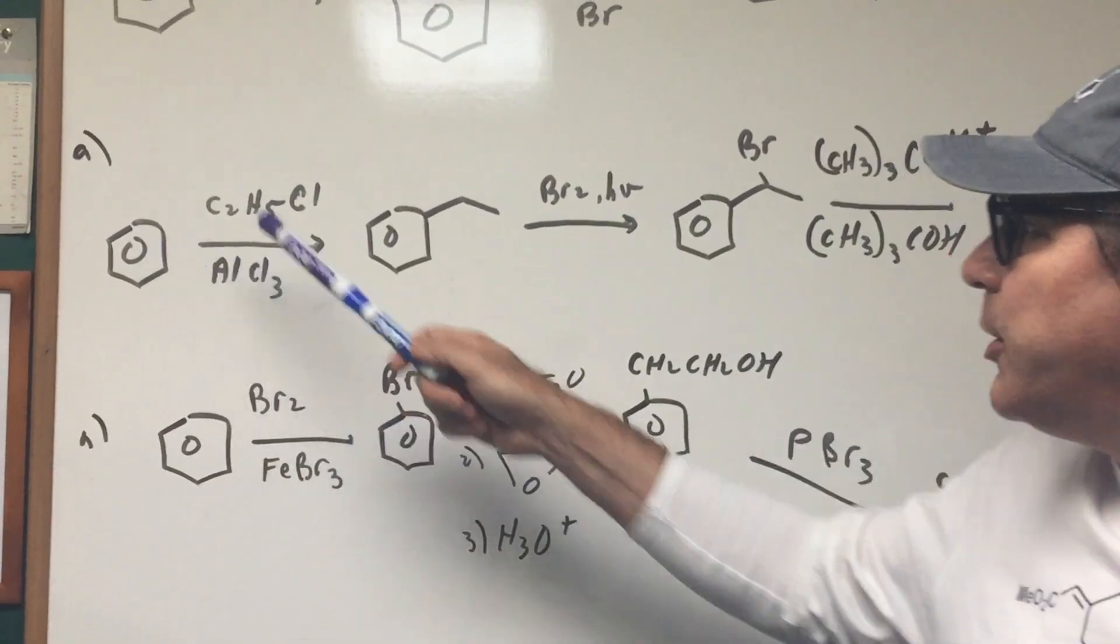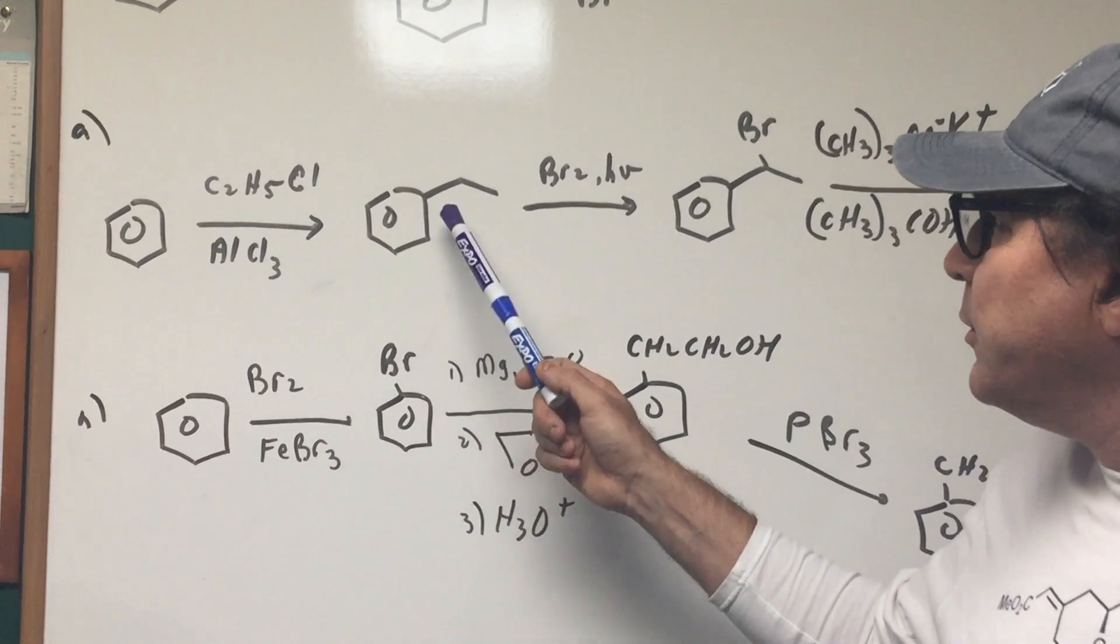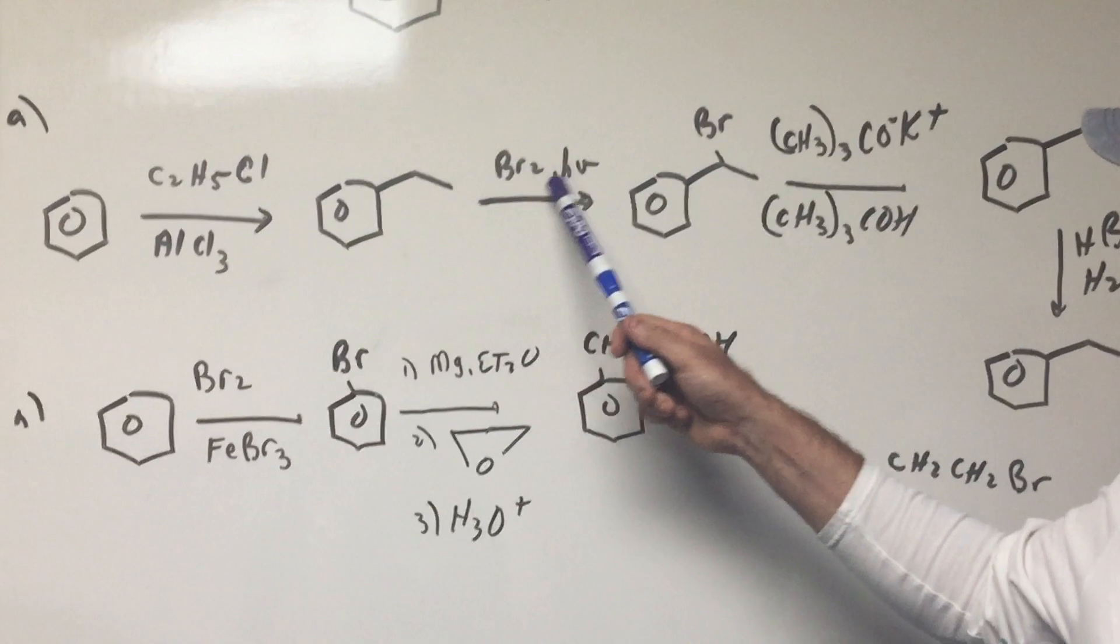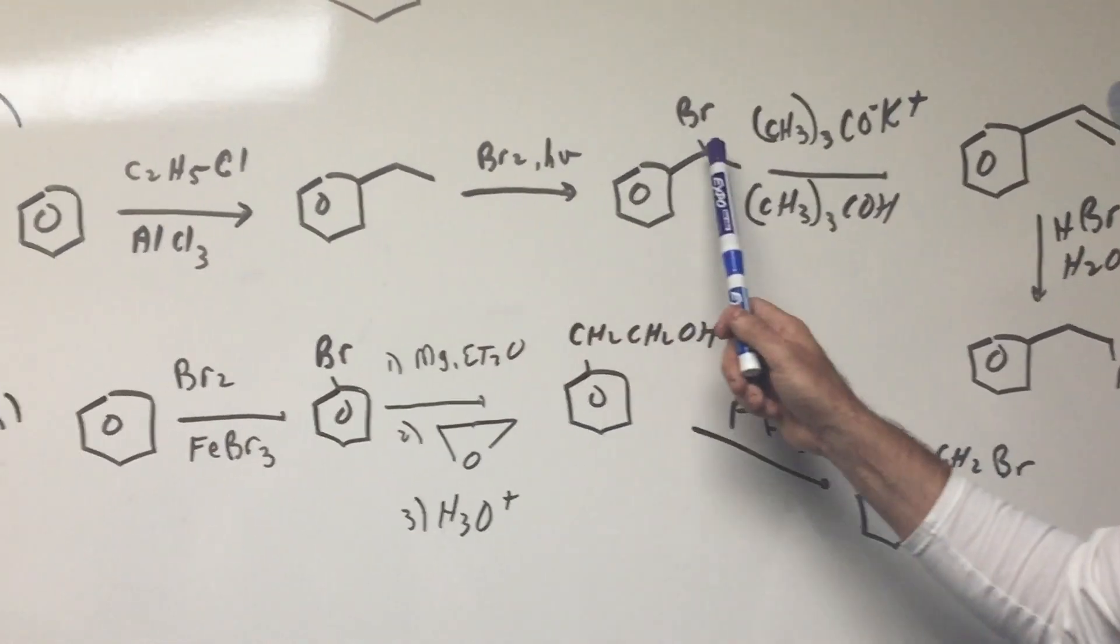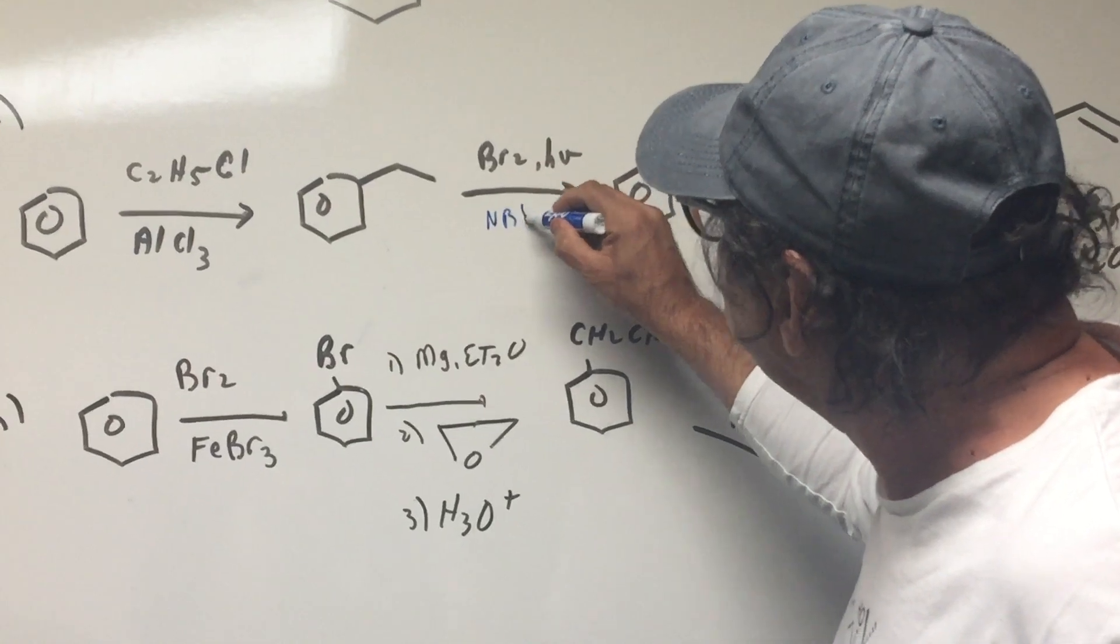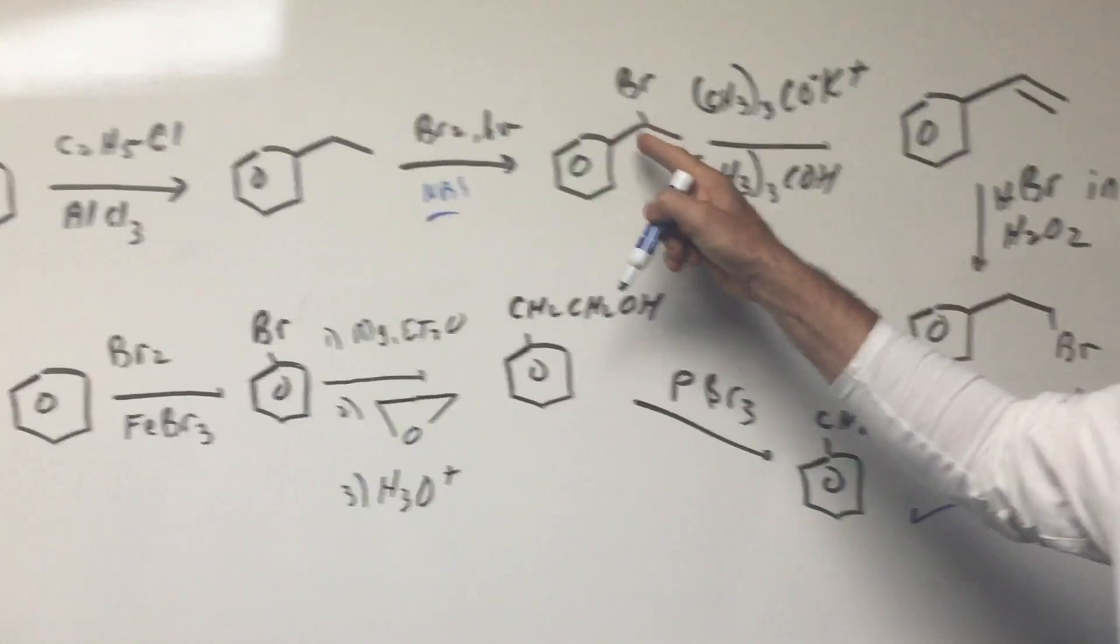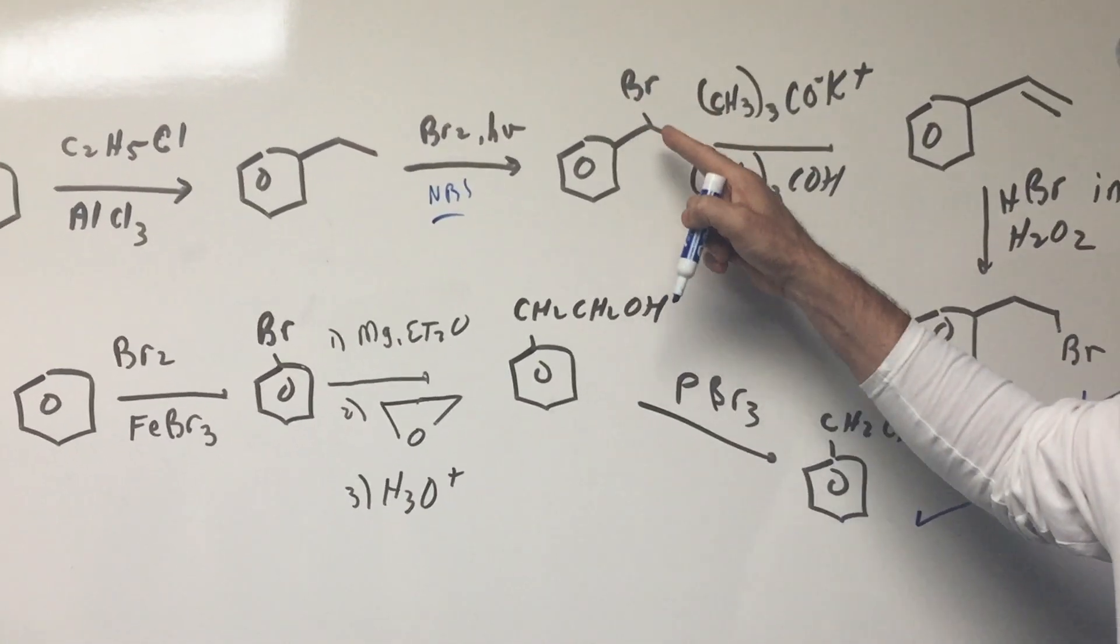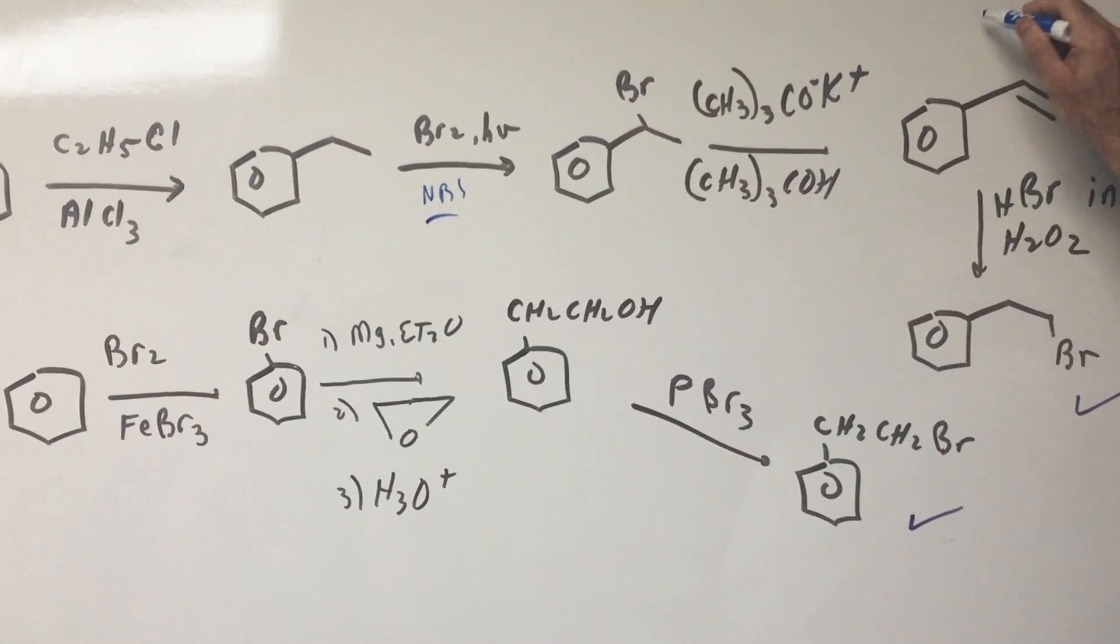I'm going to first do a Friedel-Crafts. The Friedel-Crafts reaction will put on an ethyl group. Now I'm going to then use bromine and light. Instead of bromine and light, I could have also used the NBS, and that's going to put the bromine one away from the benzene ring to substitute the benzylic hydrogen. Then I do an E2.